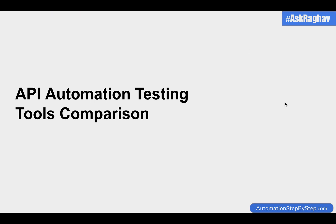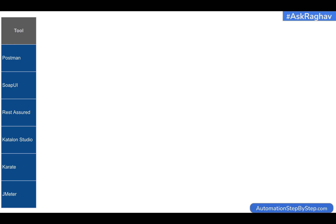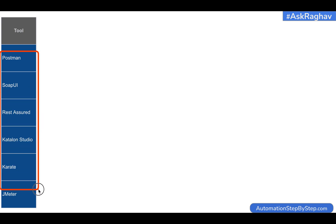Hello and welcome to this episode of Ask Raghav. Today we are going to see a detailed comparison of API automation testing tools. In this comparison, we are going to include some very commonly used, very popular API testing tools. We will see here Postman, SoapUI, Rest Assured, Katalon Studio, Karate, and JMeter.